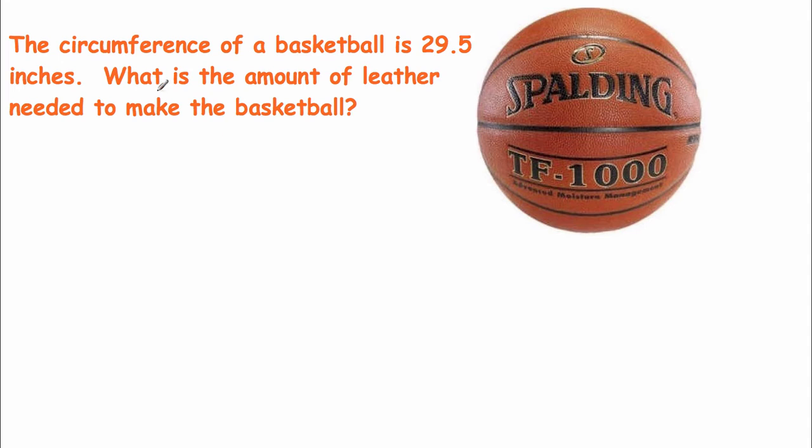Let's take a look at this. The circumference of a basketball is 29.5. What is the amount of leather needed to make the basketball? Well, that's surface area. This is circumference. Our circumference formula is 2 pi r and our surface area formula is 4 pi r squared.